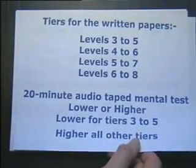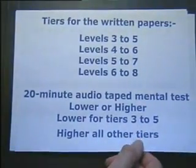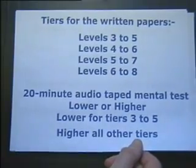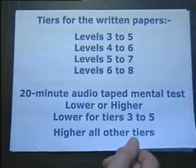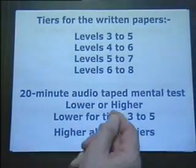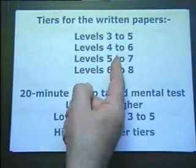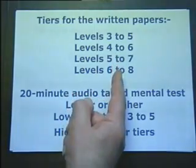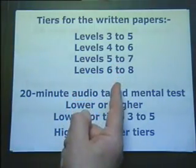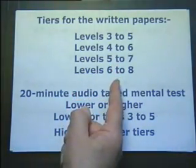There are four tiers of entry for mathematics in the written papers: Levels 3–5, 4–6, 5–7, or 6–8.